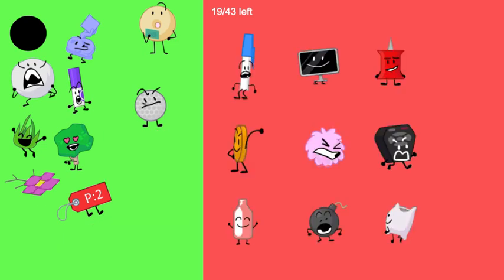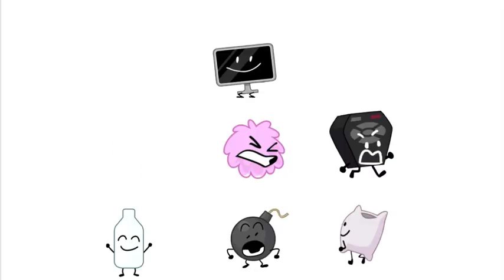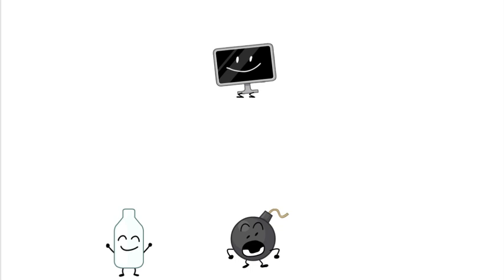The next nine up for elimination are Pen, TV, Pin, Koine, Puffball, Remote, Bottle, Bami, and Pillow. The first seven safe are Pen, Koine, Remote, Pillow, Puffball, and Bottle. The final two are TV and Bami. I think TV would go. Again, Bami's possible story arc would push him to safety.